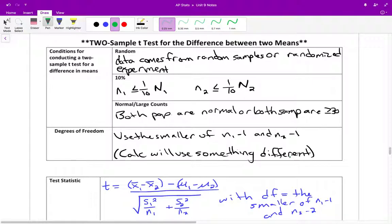For the 10% condition, again, that's n1 is less than or equal to one-tenth, capital N1. Same for the second sample. For the normality or large counts condition, both populations are normal, then you're done. Or both samples are at least 30. That works too.